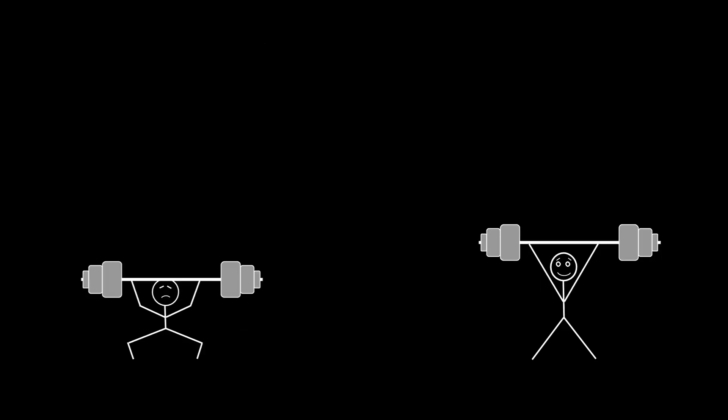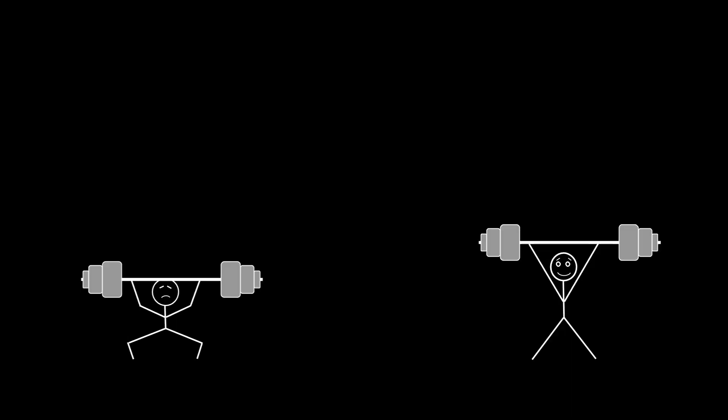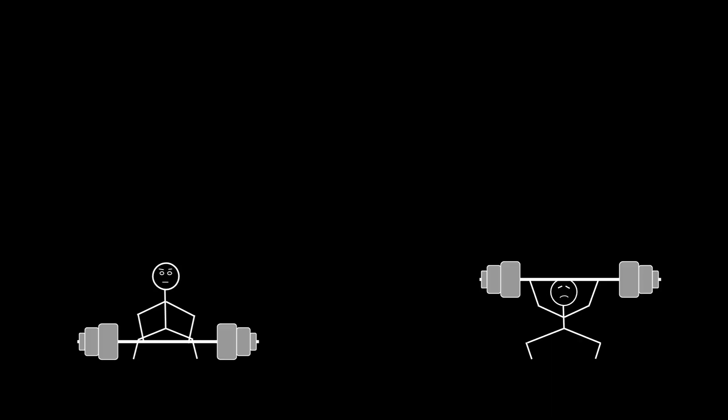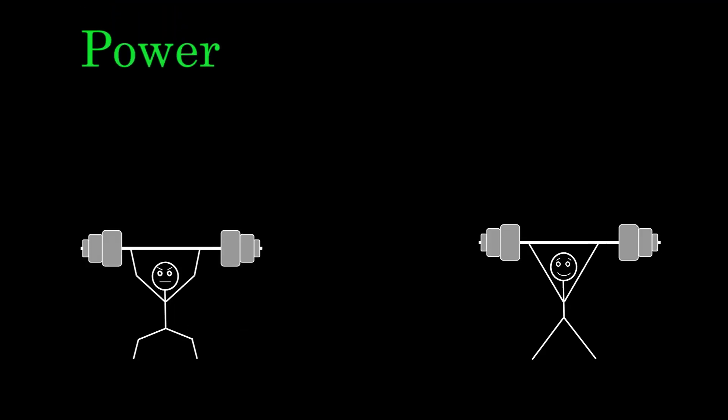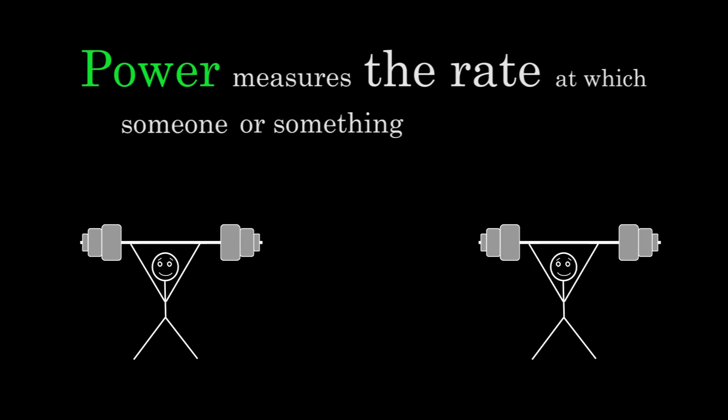But the weightlifter on the right is lifting his weight faster and there should be a way to distinguish between what he's doing and what the other slower weightlifters are doing. We can distinguish their actions in physics by talking about power. Power measures the rate at which someone, like these weightlifters, or something, like an automobile engine, does work.